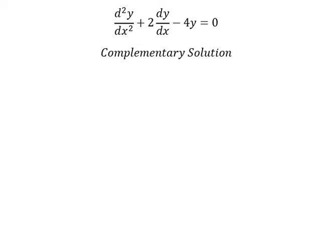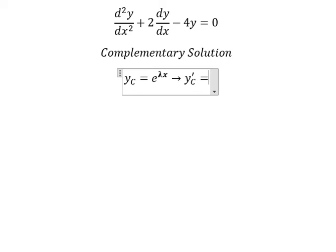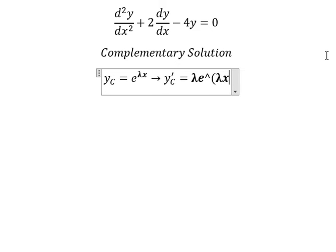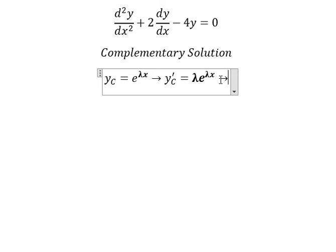We put yc equals e to the power of lambda s. We need to find the first derivative of this, so we have lambda e to the power of lambda s. We keep the same e to the power of lambda s, then take the derivative of lambda s to get lambda.